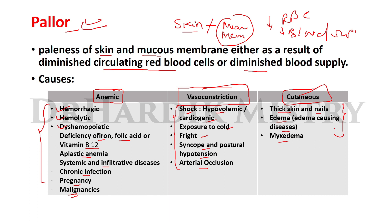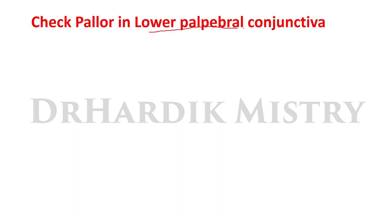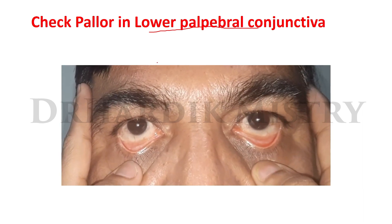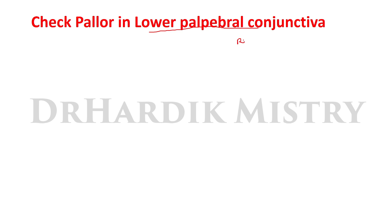The sites of pallor include the lower palpebral conjunctiva, tongue, soft palate, palm, and nails, as well as other mucosal areas like vaginal or rectal mucosa. To check pallor in the lower palpebral conjunctiva, lower down the lower eyelid as shown in the video. If you see redness, it is normal, but if you see paleness in the lower palpebral conjunctiva, then pallor is present.